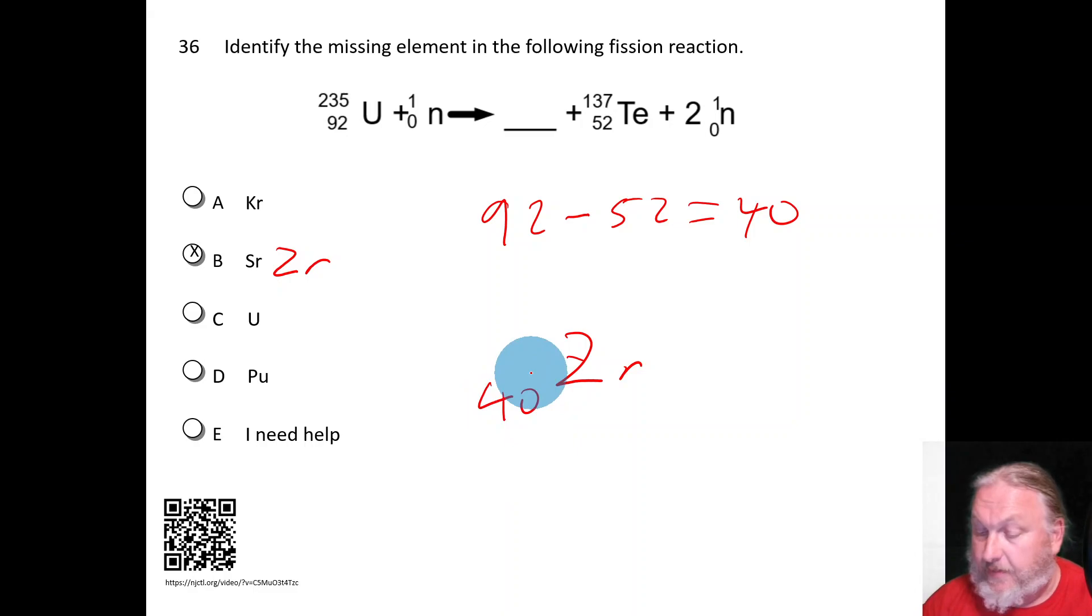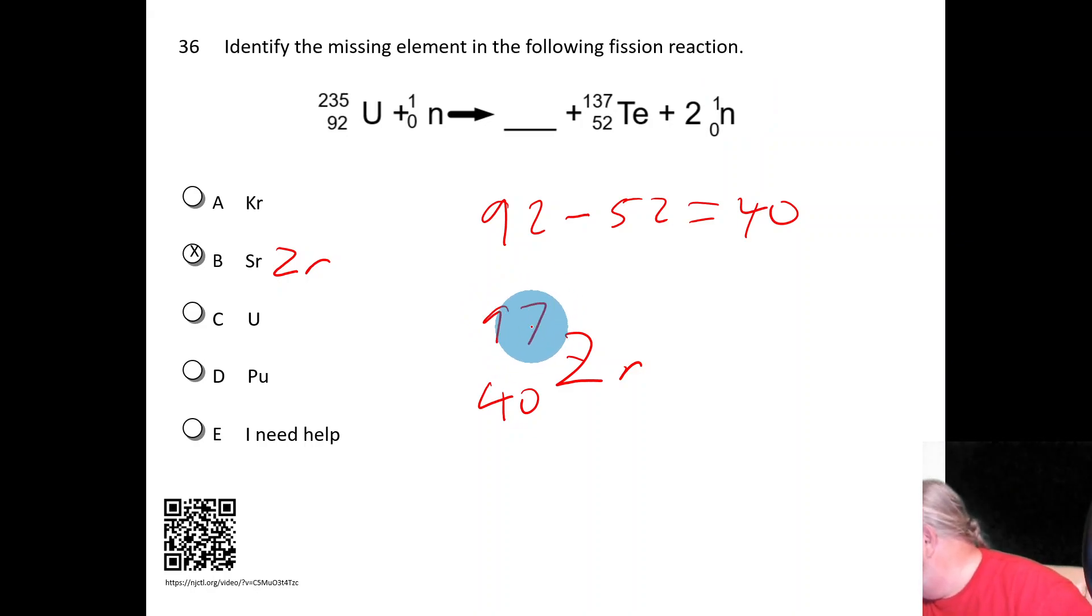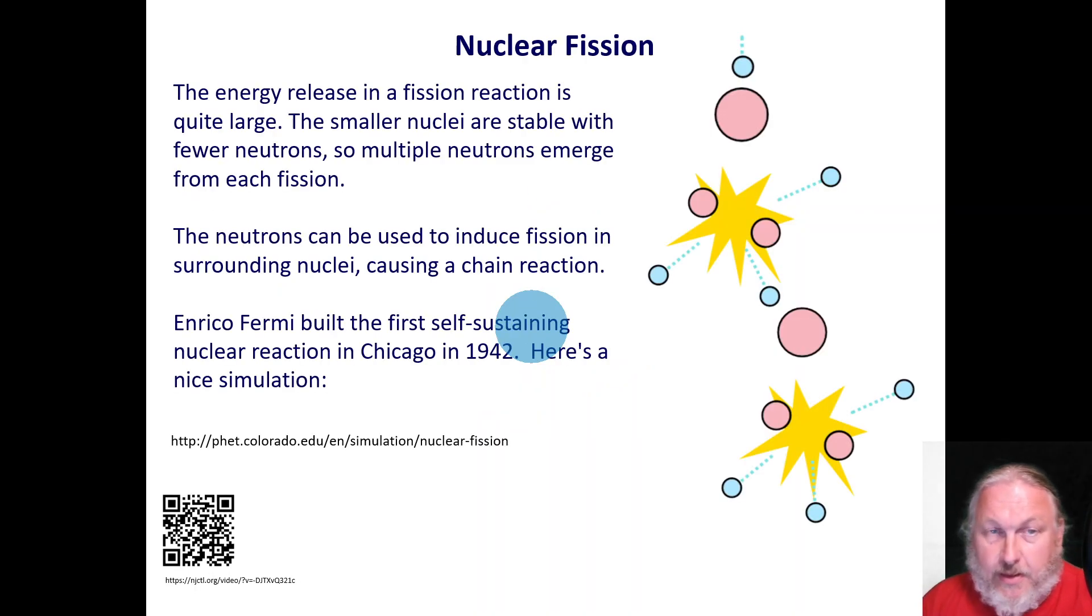92 minus 52 equals 40, which is zirconium. And then let's get the mass number right. So 236 minus 137 minus two neutrons, I come up with 97. So that is zirconium-97. And you can see, looking at the periodic chart, that is a radioactive isotope. Not the kind you would find in a ring.